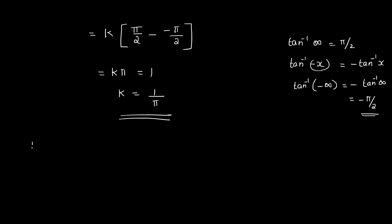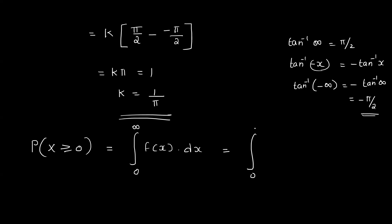The next question is the probability of x greater than or equal to 0. That is the integral from 0 to infinity of f of x dx. Substituting k equal to 1 by pi, we get 1 by pi times the integral from 0 to infinity of 1 by 1 plus x squared dx.